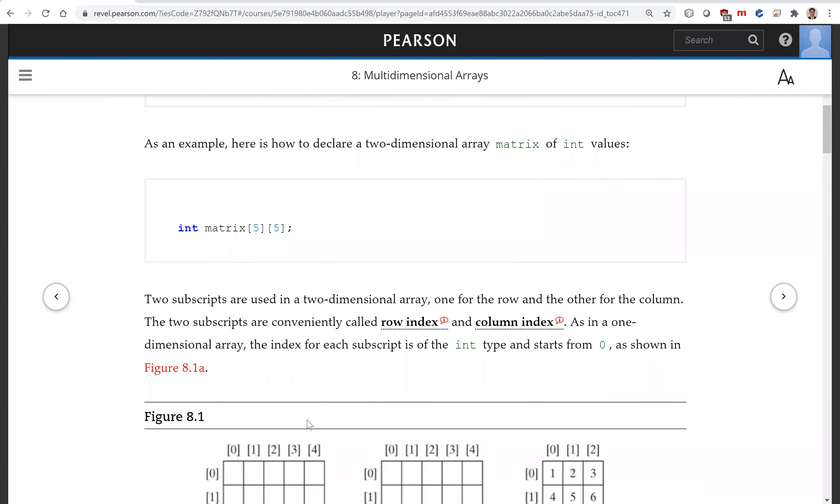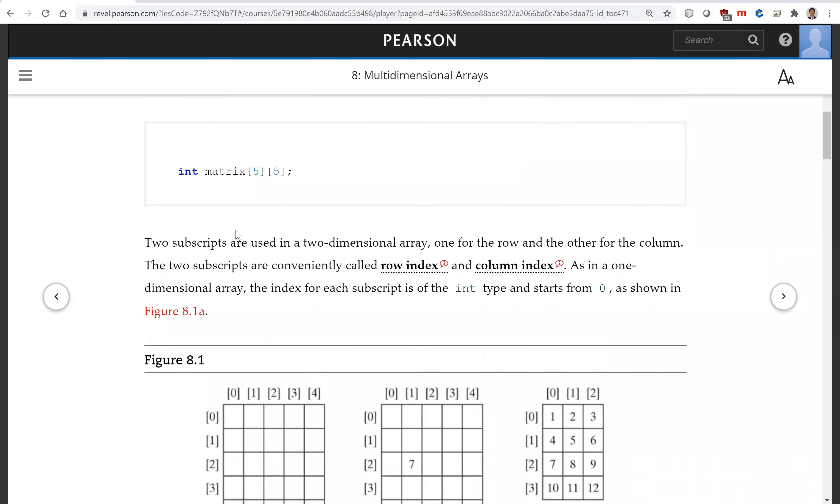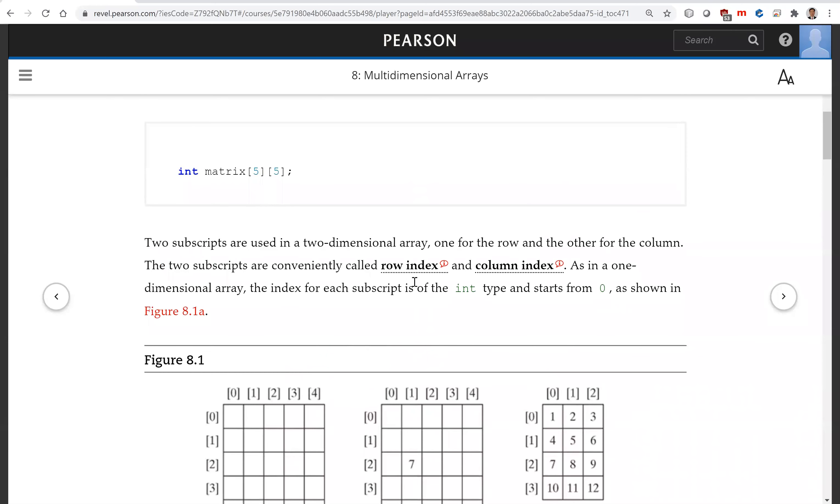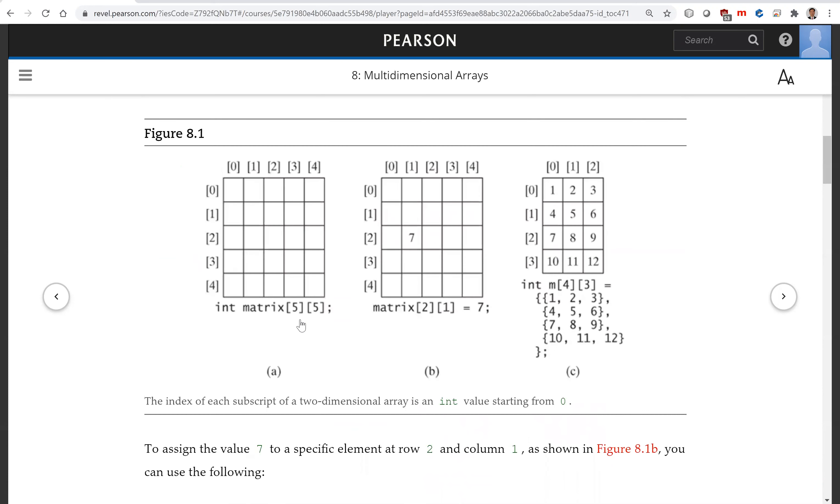Now you can reference the array elements using these two indices. The first one is called the row index and the second one is called the column index. So look, right here is matrix[2][1]—this is row two, column one. The row index is two and the column index is one. You can assign seven to this cell.